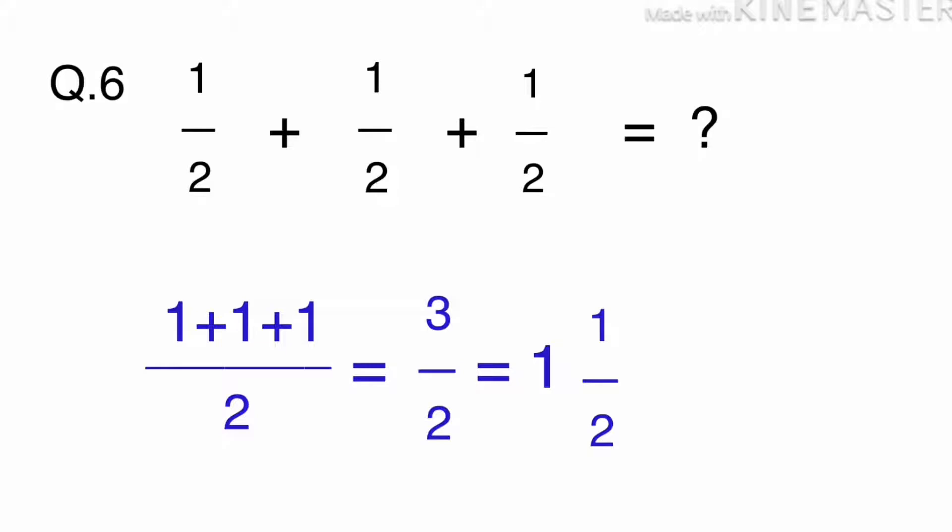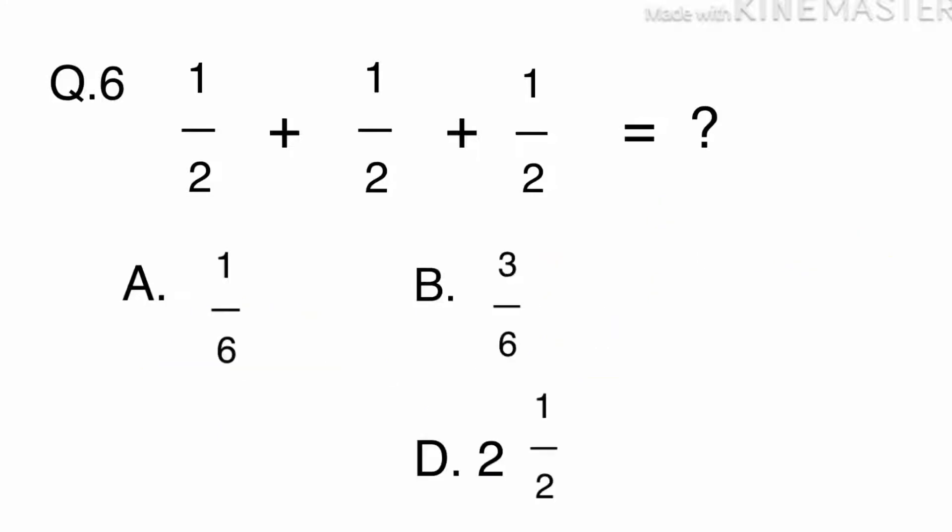For the question, all the denominators are the same, so you just need to add the numerator which is the top number. There are two halves in one whole, so three halves must be 1 and a half. The answer is C. 1 and a half.